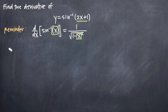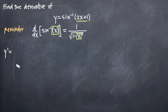So the derivative, y prime, we'll need to calculate using chain rule. For the chain rule, we'll recognize arc sine as the outside function and 2x plus 1 as the inside function. We'll take the derivative of the outside function first, leaving the inside function completely untouched, and then multiply by the derivative of the inside function.